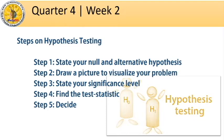Step 3: We state our significance level, or on other sources, we call that the alpha level. This is denoted by the Greek letter alpha, in percentage form or in decimal form. Significance level is the probability of making the wrong decision when the null hypothesis is true. Whenever it is not specified, we will use 0.05 as our significance level.